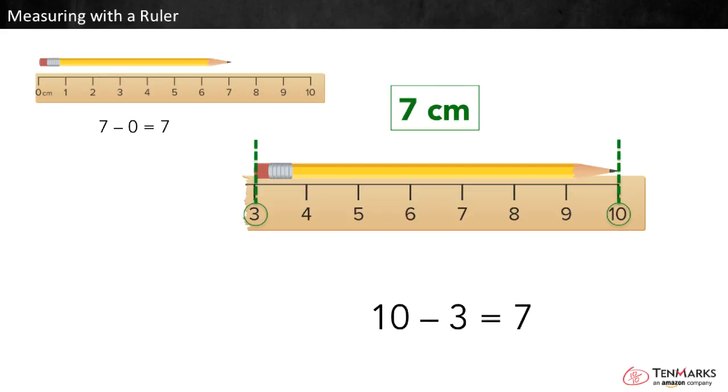So one way to find the length of an object is to line it up with two numbers on a ruler, then find the difference between those two numbers.